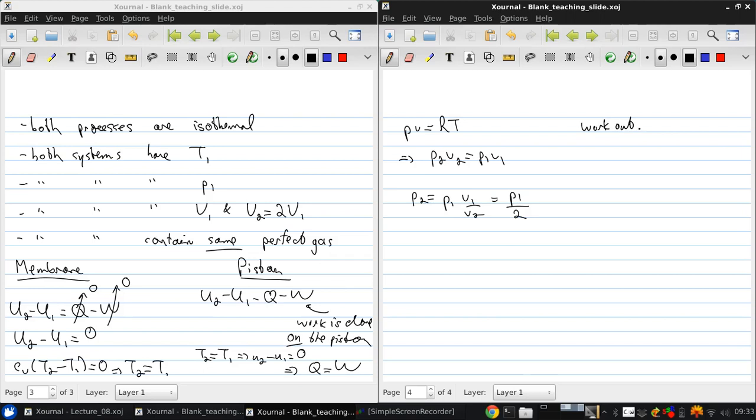For the piston, the work out can be determined by the integral of PdV. And since we're doing an isothermal expansion, heat is transferred in to keep the temperature constant. So using P equals RT1 over V, we can write that W is the integral of RT1 from V1 to V2 dV over V. So the work is RT1 ln(V2 over V1) and Q equals RT1 ln(2) because V2 over V1 is 2.